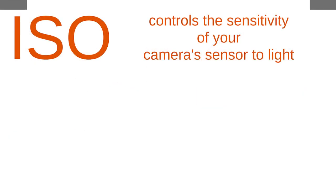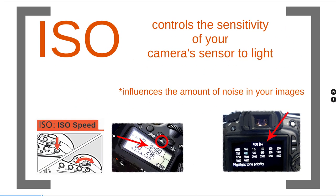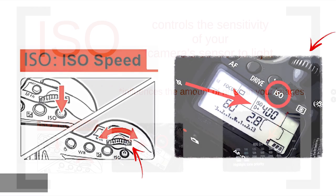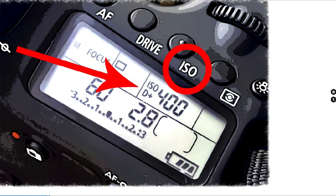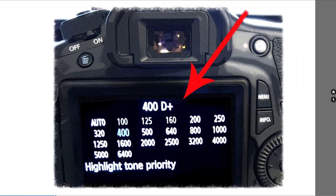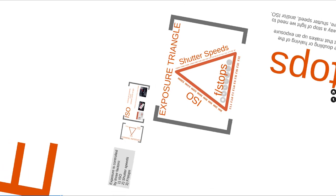ISO stands for the International Organization Standards — yes, it's not in the order of the acronym. ISO is a standardized industry scale for measuring your camera sensor's sensitivity to light. Essentially, ISO measures and sets the sensitivity of your digital image sensor. On every camera brand, there is a button to quickly access the ISO settings. Once you press the ISO button, use the camera scroll wheel to adjust the ISO you want. The ISO is displayed on both the top and rear LCD of the camera.